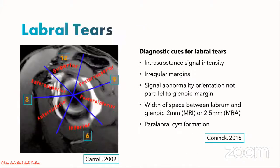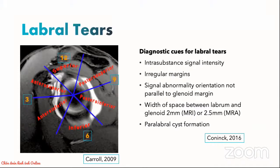Before we get into the specific labral tear patterns, we should set some ground rules on how we describe labral tears on MRI. First, describing location: a sagittal en-face view of the glenoid demonstrates two common methods. First, a clock face approach, where 12 o'clock is the most superior point at the biceps long head insertion, 3 is anterior, 9 is posterior and 6 o'clock is inferior — this applies to both left and right shoulder. We can also use six zones: anterior superior, superior, posterior superior, posterior inferior, inferior, and anterior inferior.